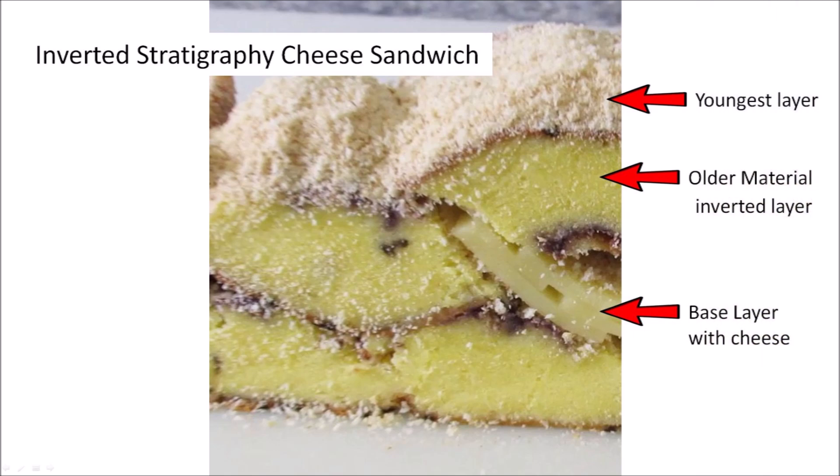The moral of this parable is that when you dig through the older material in the inverted layer, you will find the base layer with cheese, which was the surface of the terrain at the time of the impact. Inverted stratigraphy can be detected by examining at least three sections of a core sample in the rim.